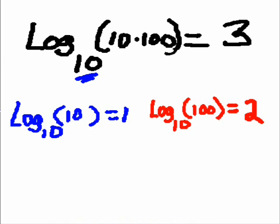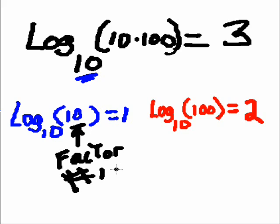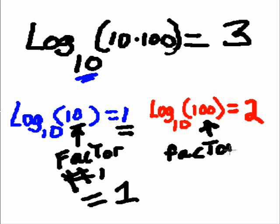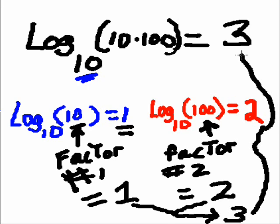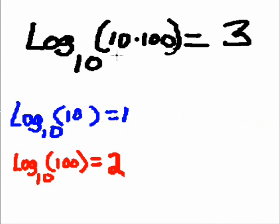So, log base 10 of 100 is equal to 2. So, we took the log of our first guy, first factor, factor number 1, that was equal to 1, right here. And we took the log of factor number 2, our second factor, and that was equal to 2. And if you add 1 and 2 together, you're going to get 3, which was the answer for the guy up here.